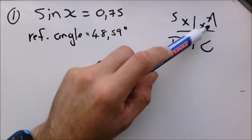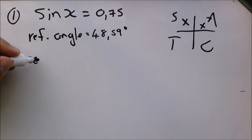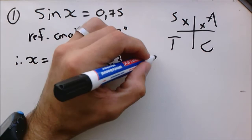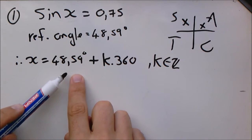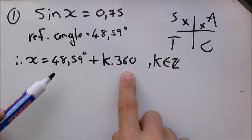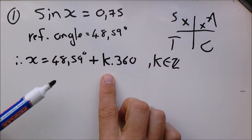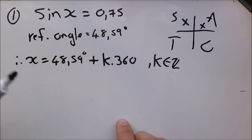We are working in the first quadrant for the first answer. Therefore x equals 48.59 plus k times 360, where k is an element of Z. In the first quadrant we know 48.59 will give us 0.75, and this answer is repeated every 360 degrees as explained in the previous video. k element of Z means that k is a whole number, negative or positive - it can be negative 1, 0, 1, 2, 3, 4, doesn't matter, as long as it's a whole number.